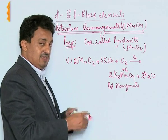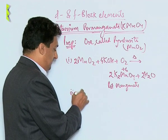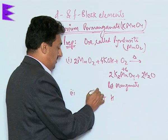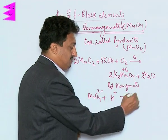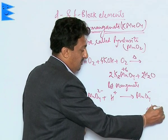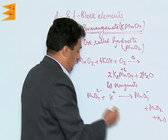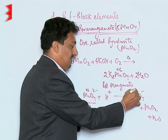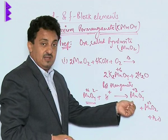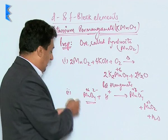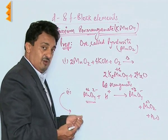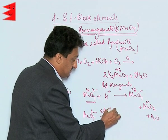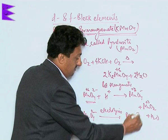In the second step, the green-colored potassium manganate is oxidized further by treating it in neutral or acidic medium. In acidic medium, MnO4²⁻ easily undergoes a disproportionation reaction, forming MnO2 and MnO4⁻. From +6, it gets oxidized to +7 and also reduced to +4, and this is how we get the purple-colored potassium permanganate. Industrially, this second step is replaced by electrolysis.